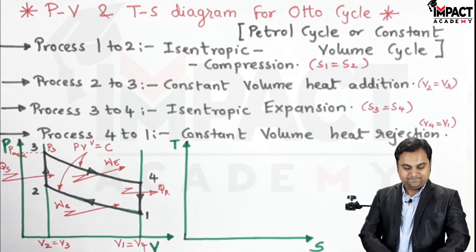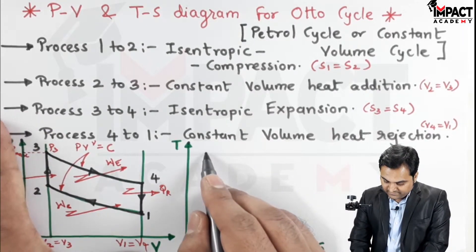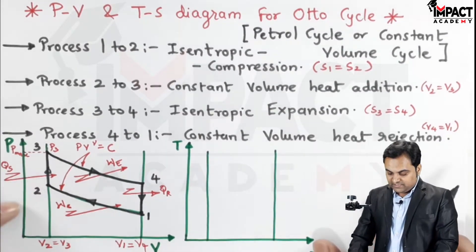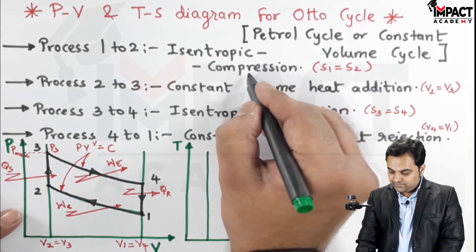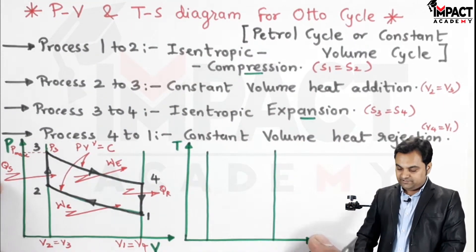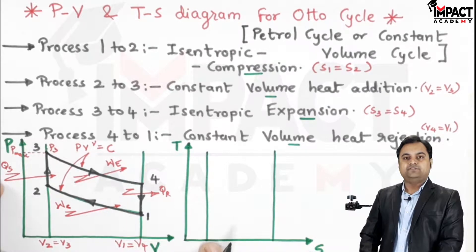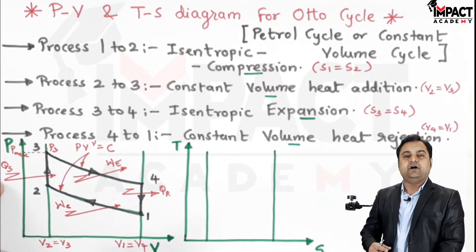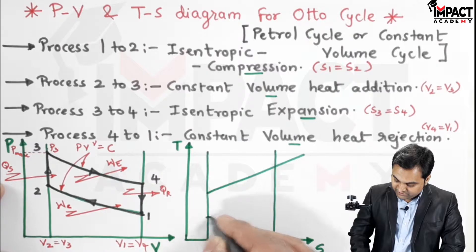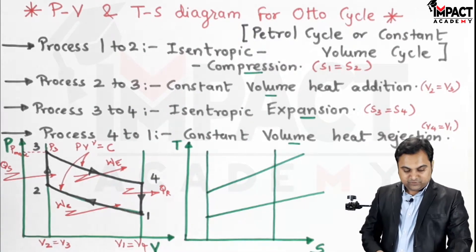Next, I'll draw the TS diagram in a similar manner. Remember the hint: first draw two light vertical lines. These represent the two isentropic processes — compression and expansion — on the vertical lines. Heat addition and heat rejection are at constant volume; constant volume lines on the TS diagram are inclined and of diverging nature, so these lines should be drawn in a diverging form.